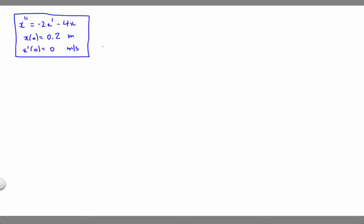So I've just recopied the DE and the initial conditions, and let's go about finding the equation of motion. First thing I would do is just take our DE and put it in the standard form where we have all of our terms over on the left side and then we've got 0 on the right side.